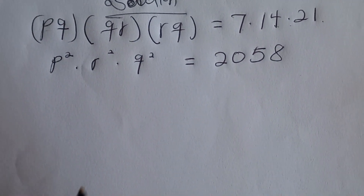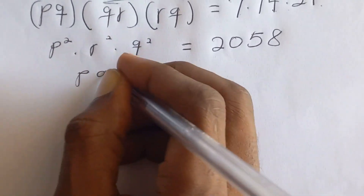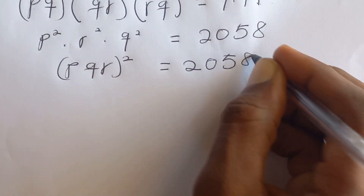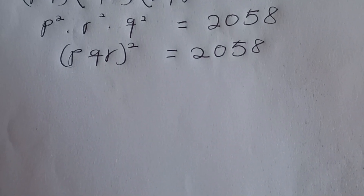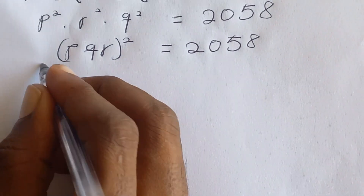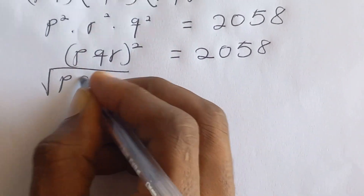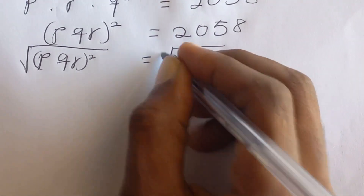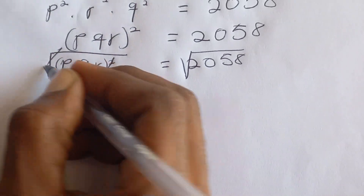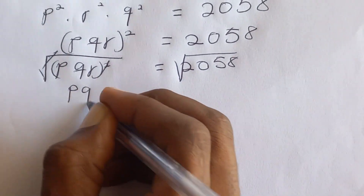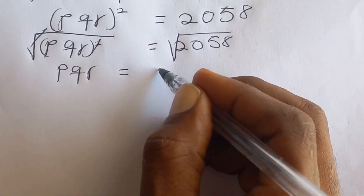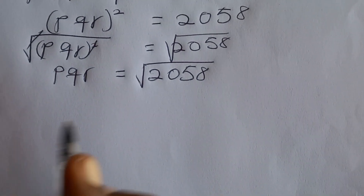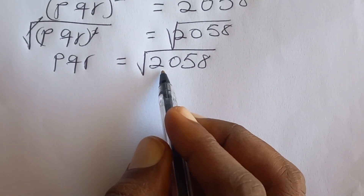In algebra, we can rewrite it as (PQR) squared, which is equal to 2058. Now we need PQR, so we take the square root of both sides. Taking the square root cancels the square, leaving PQR equal to the square root of 2058.